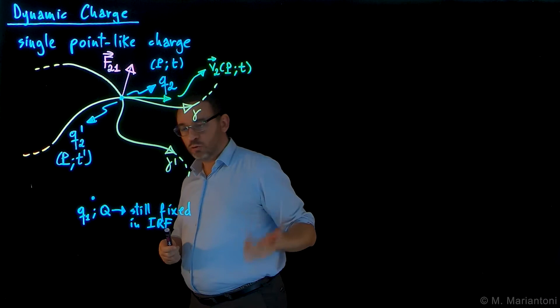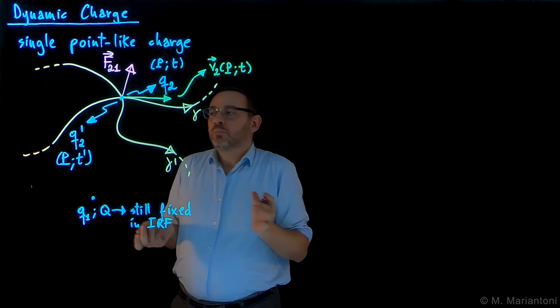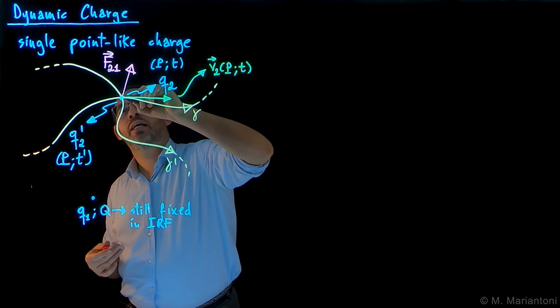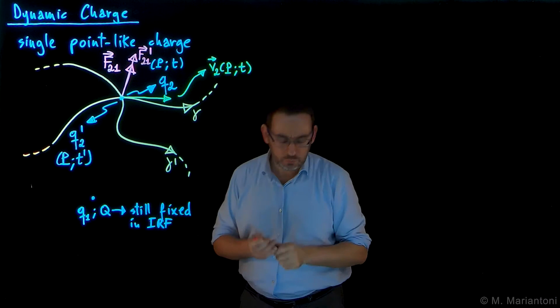Now again we take our dynamometer, I mean the Coulomb's law, we measure the force on q2 prime due to q1. In general we could find a different force compared to F21. We know that Coulomb's law still works, so it has to have the same direction. Let's sketch it a little bit longer - so this force is F21 prime.